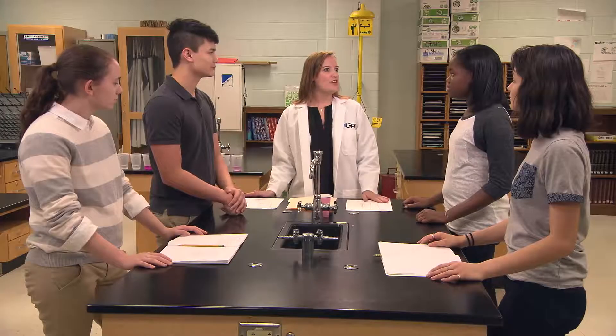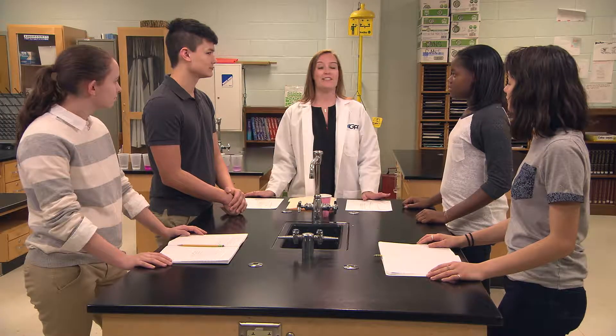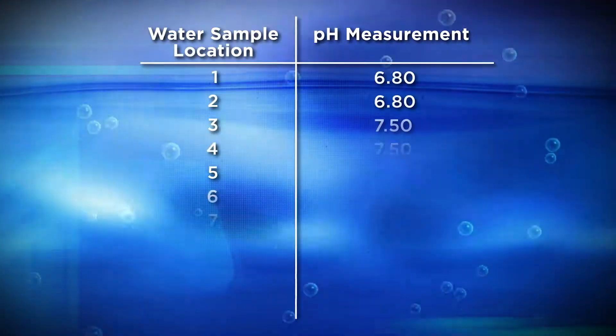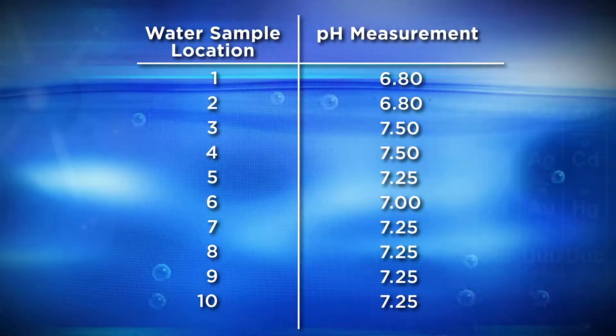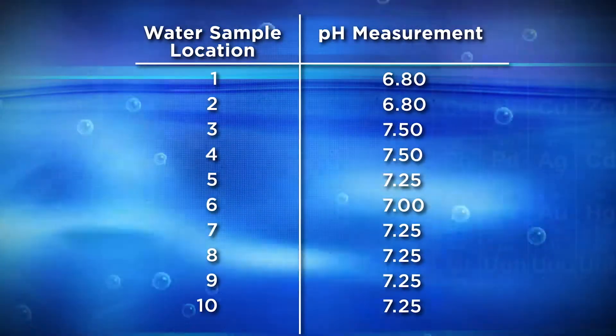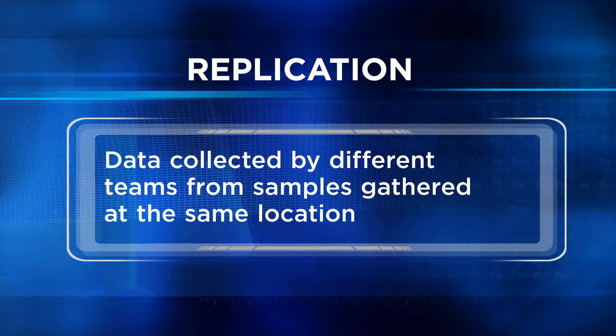So let's get back to the classroom to put these practices together. Everyone should now have measurements from all 10 samples. The first thing we'll want to do is make sure to organize the data in a data table. A simple data table might look like the letter T, like this. In this data table, you have data that your team collected and measured. We need to add measurements made by other teams — it's important to get several measurements at each water sample location. We call this replication.